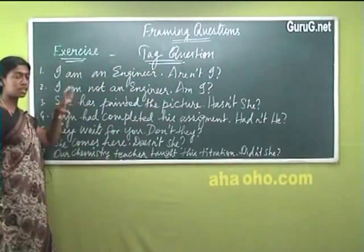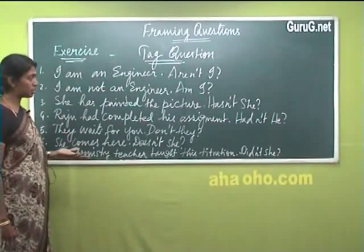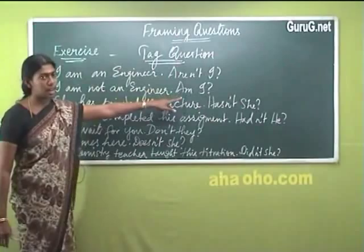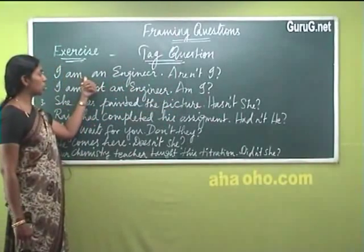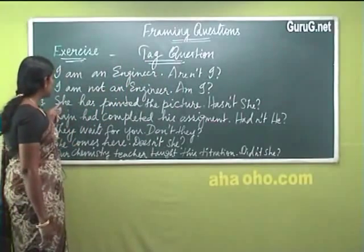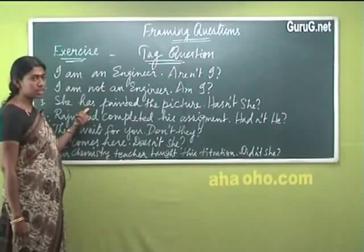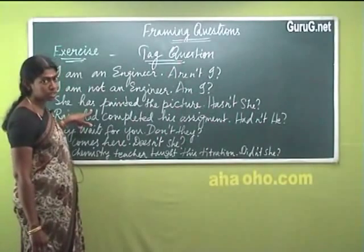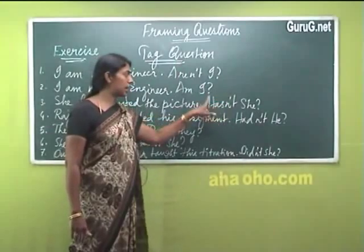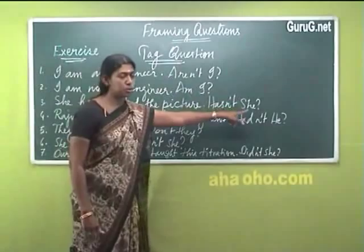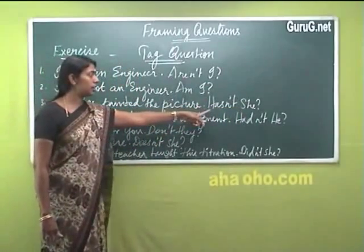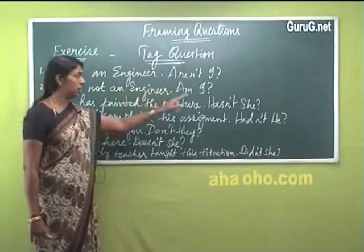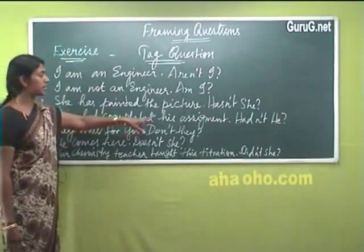'I'm an engineer, aren't I?' — one thing is noteworthy: the verb used is 'am' since the subject is 'I.' When 'I' is used as a subject, it goes with 'am.' The sentence is positive, so the tag must be negative. However, I cannot write 'amn't I' — instead I must write 'aren't I.' This is an exception where the same verb form is not used. In all other sentences, the same verb form is used either in negative or positive form in the tag.